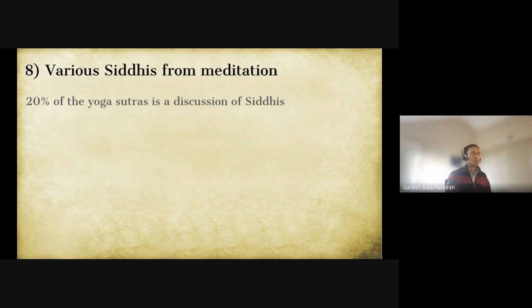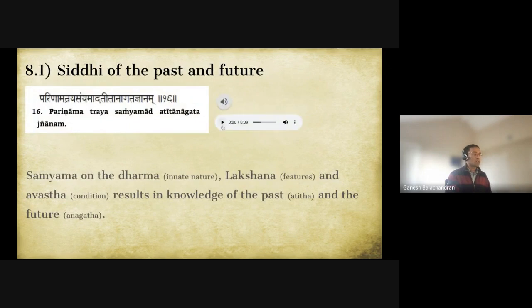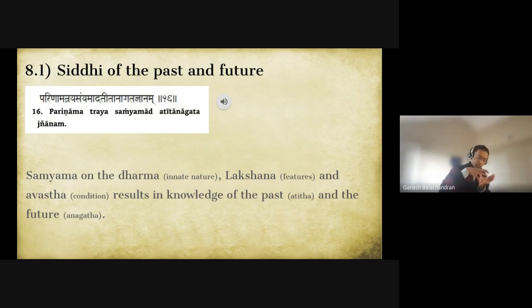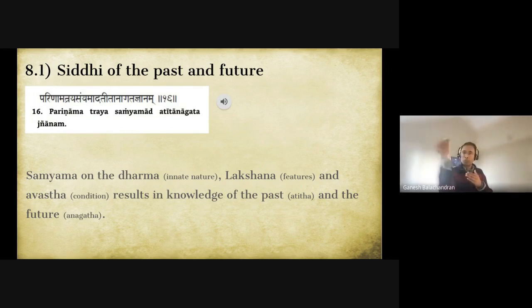Now we address the specific siddhis — 20 percent of the Yoga Sutras discusses them. The first is the siddhi of the past and future: by doing samyama on the transformation of the three — dharma (characteristic), lakshana (feature), and avastha (state, whether new or old) — knowledge of the atita (past) and anagata (future) is obtained. By meditating on something and understanding how it could have moved given the fixed substratum, one can know both its past and the trajectory of its future.